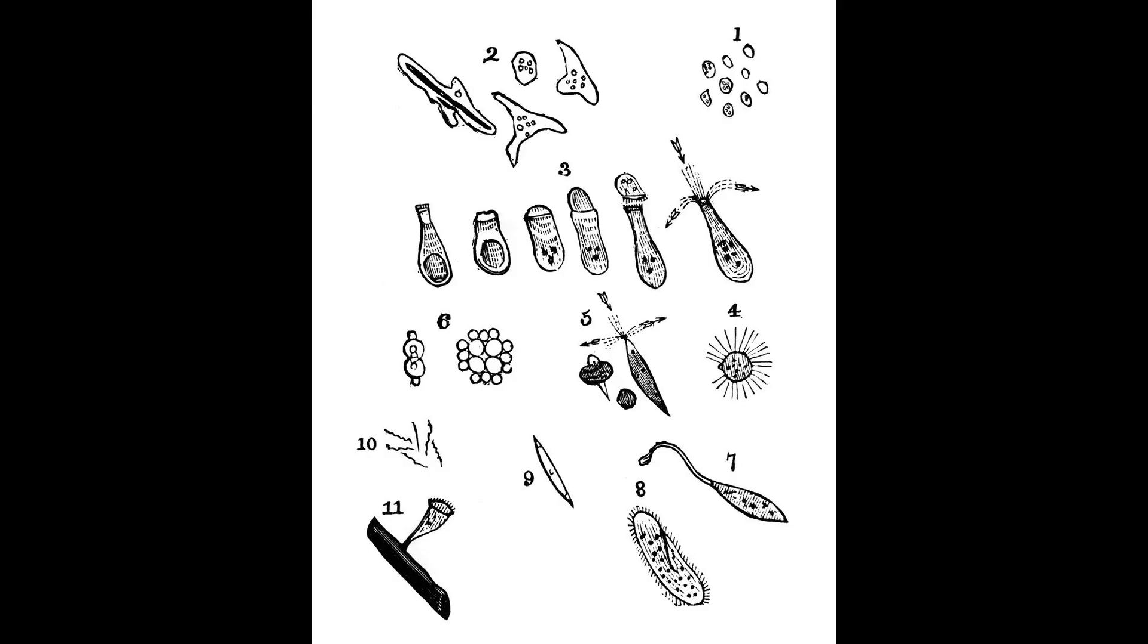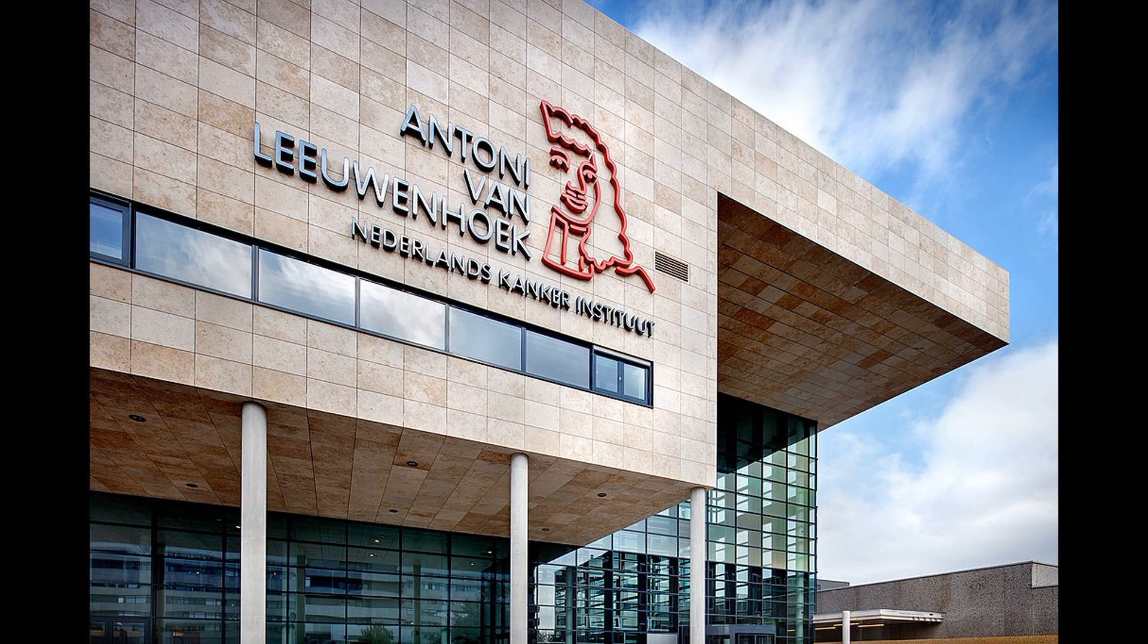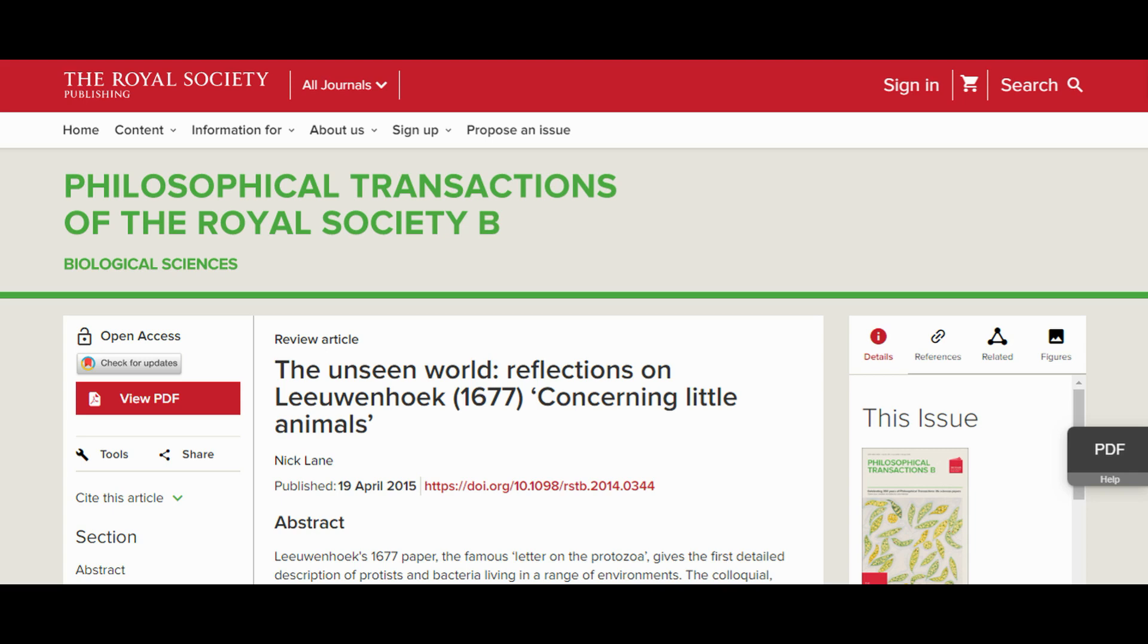He called these microbes animalcules, discovering both relatively big single-celled creatures which we would later call protists, and even the very tiny ones which we now call bacteria. He also detailed the structures of various human cells. Because of his importance in the history of science, van Leeuwenhoek has received wide recognition for his achievements. A hospital in Amsterdam that specializes in oncology was named after him. And in a review article, biochemist Nicolaine wrote,